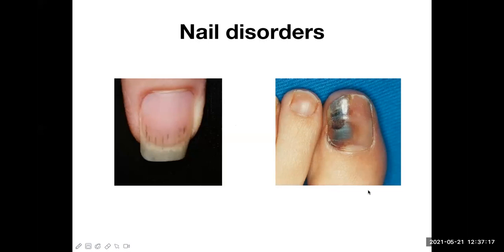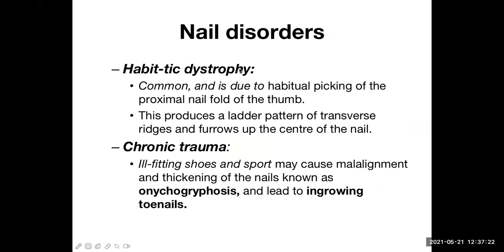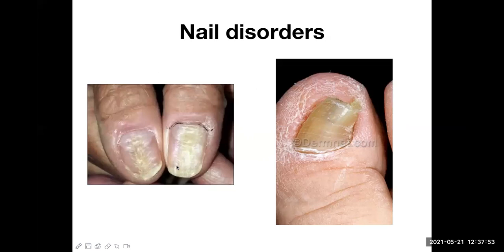Another type is habit dystrophy, caused by habitual picking of the proximal nail fold of the thumb. This produces a ladder pattern of transverse ridges and furrows in the center of the nail. Many people, when anxious, chew or bite their finger area, and over time the nail develops this type of problem.